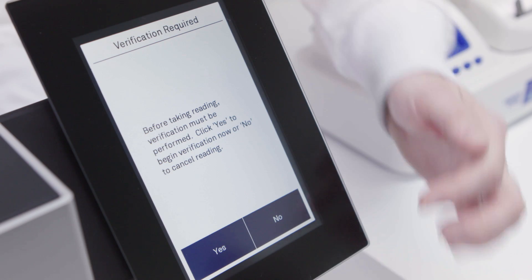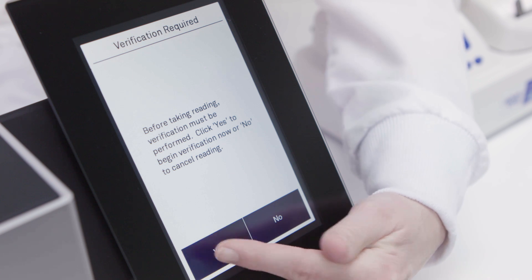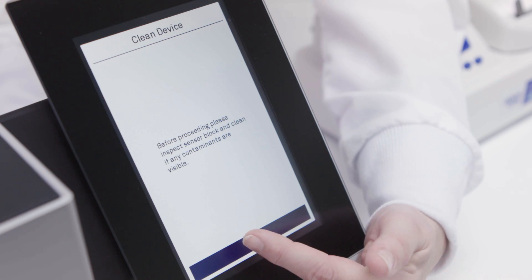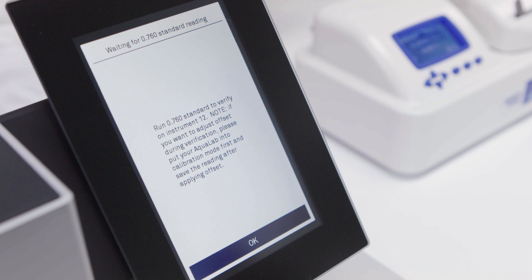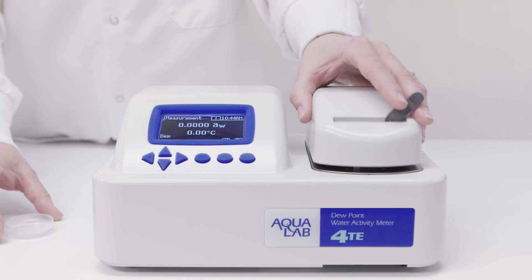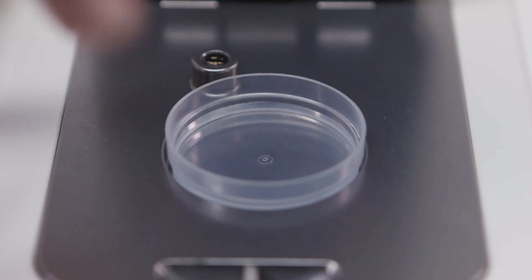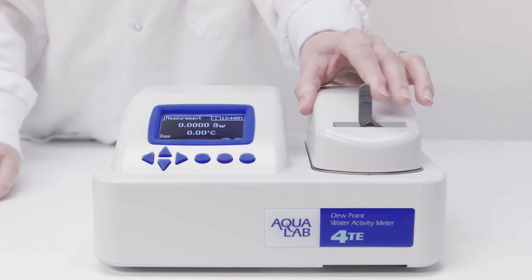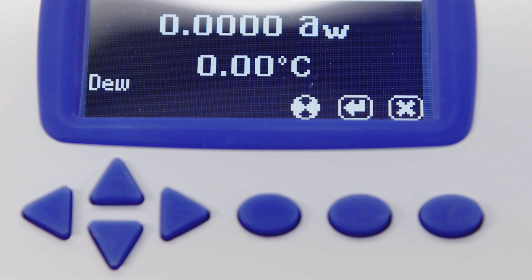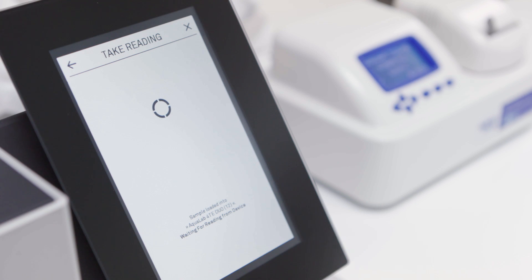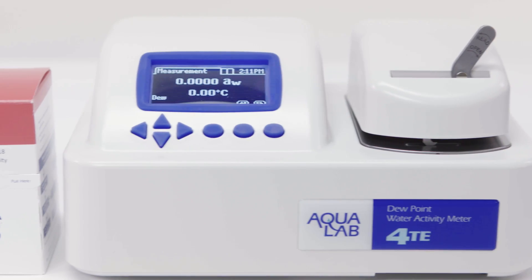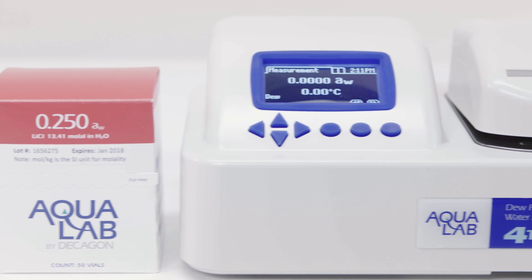Let's move on to verification of the instrument. The safety and quality of your product depends on its water activity reading, and the quality of your water activity reading depends on the performance of your water activity instrument. It's not something you want to take for granted. Fortunately, you can use salt solutions with a known water activity to verify that your instrument is performing correctly. Often these verifications need to be documented and auditors and inspectors will expect to see these values.